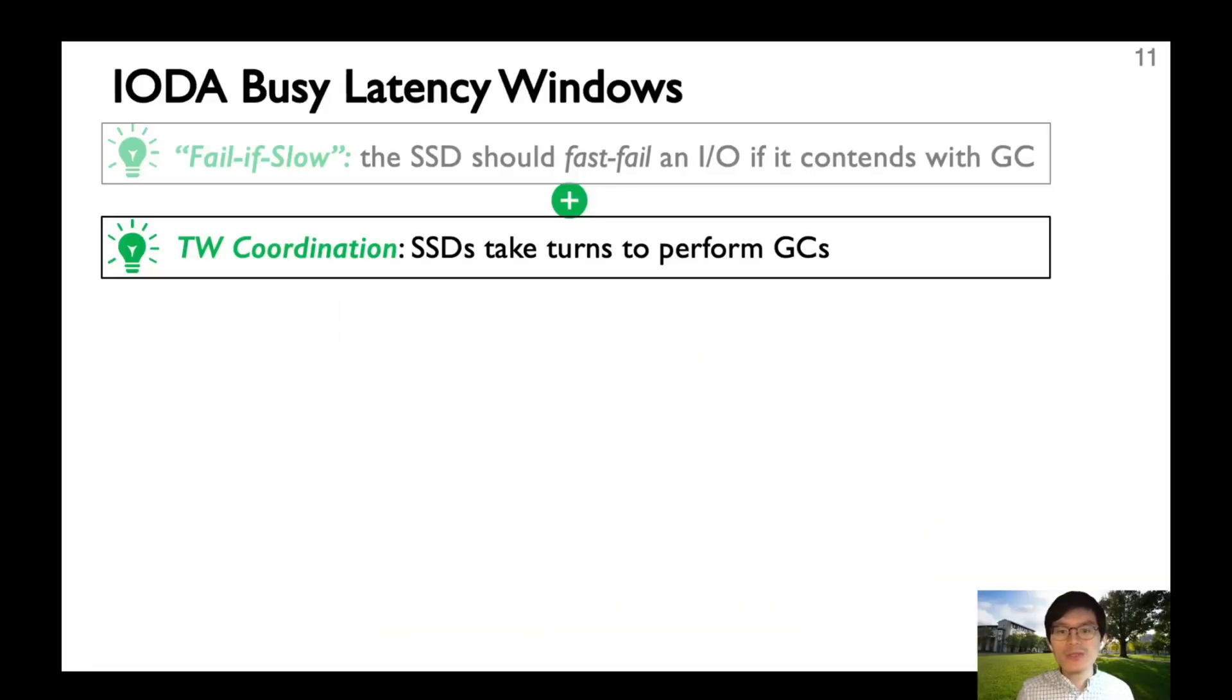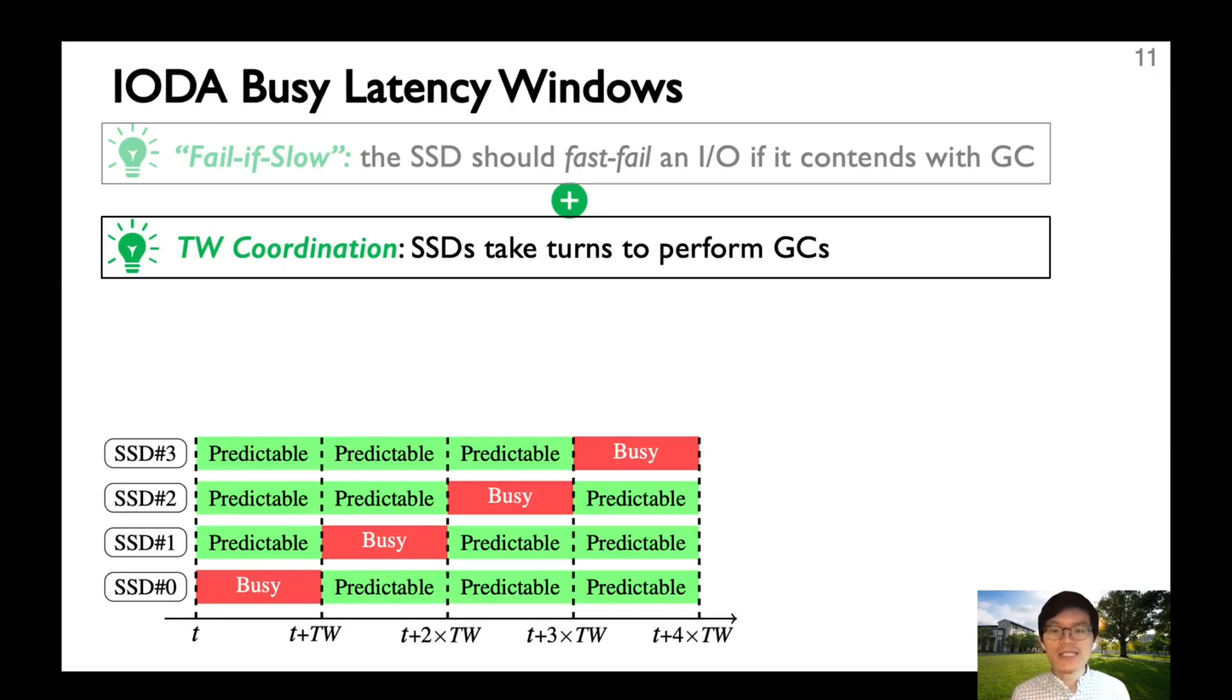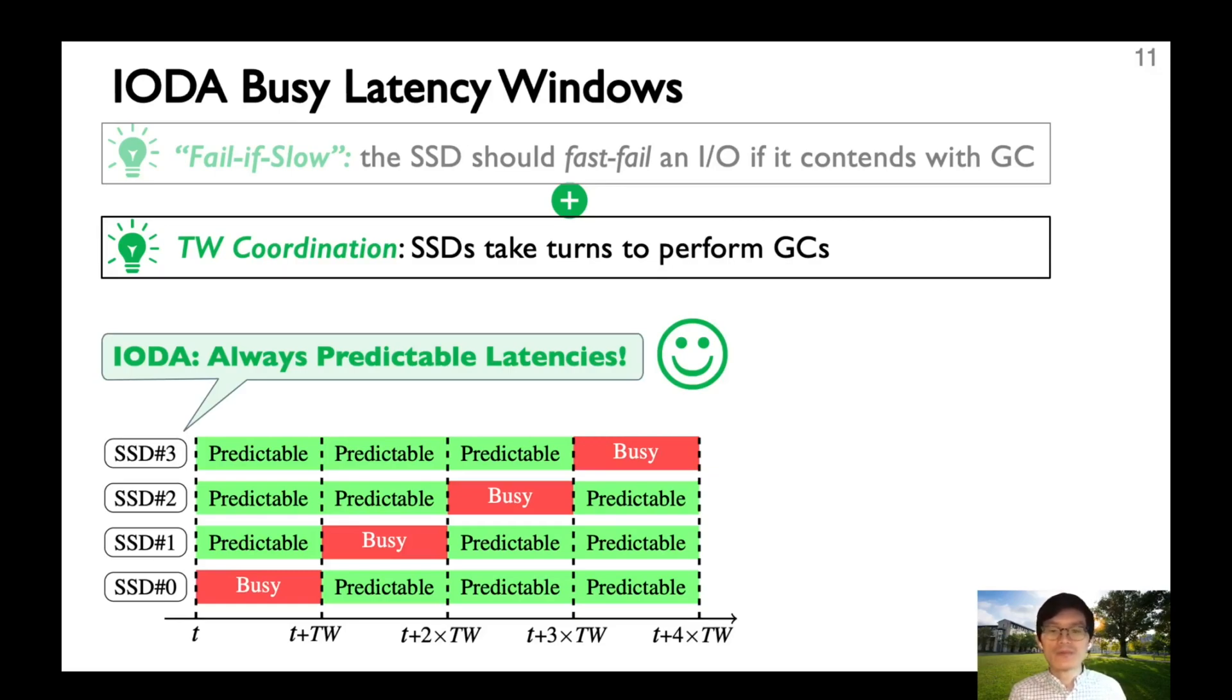To ensure proactive reconstruction will always be fast, we need to create a case where at most one busy SSD at any time. Is it possible? Well, the answer is yes. We can schedule the SSDs in the same array to perform background operations in different time windows. Thus, reconstruction is guaranteed to work. Each SSD can stick to its own time window in an autonomous manner. Thus, minimal coordination across SSDs is needed.